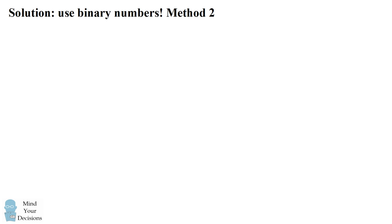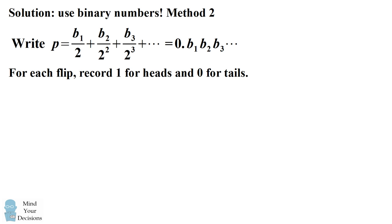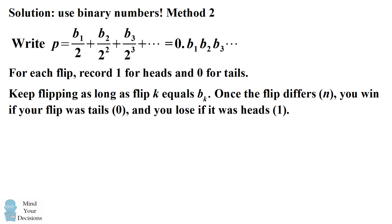There's another way you can use binary numbers to create a game in which you win with probability p. We start with our binary representation of p and now do something slightly different. For each flip of the coin, we record a 1 if we flipped heads and we record a 0 if we flipped tails. We are going to keep flipping the coin as long as flip k equals the binary digit at position k. Once we get to a point where the flip differs — say that's toss n — we define that you win the game if your flip was tails and you lose if the flip was heads.